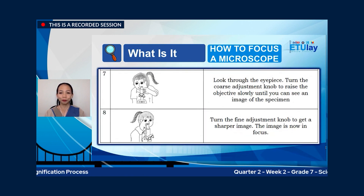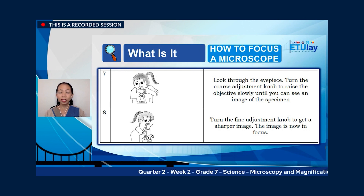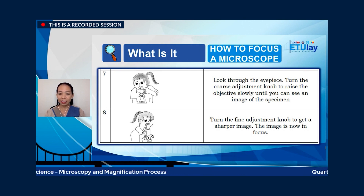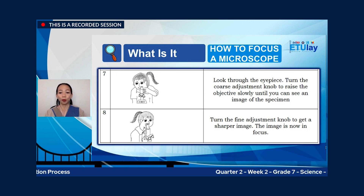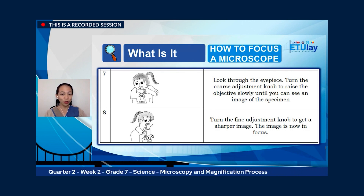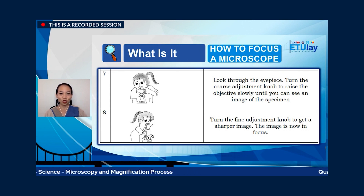Step seven: look through the eyepiece. Turn the coarse adjustment knob to raise the objective slowly until you can see an image of the specimen. Step eight: turn the fine adjustment knob to get a sharper image — the image is now in focus. Focusing a slide on a microscope takes patience, so resist the temptation to rush.